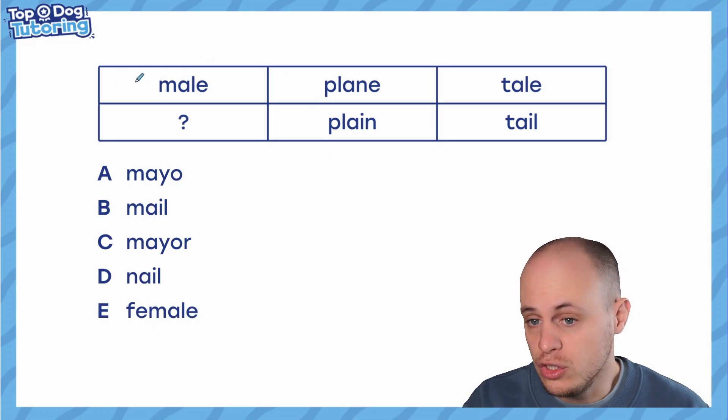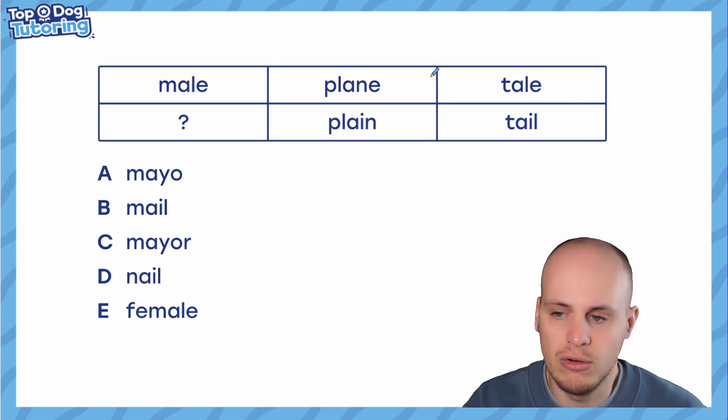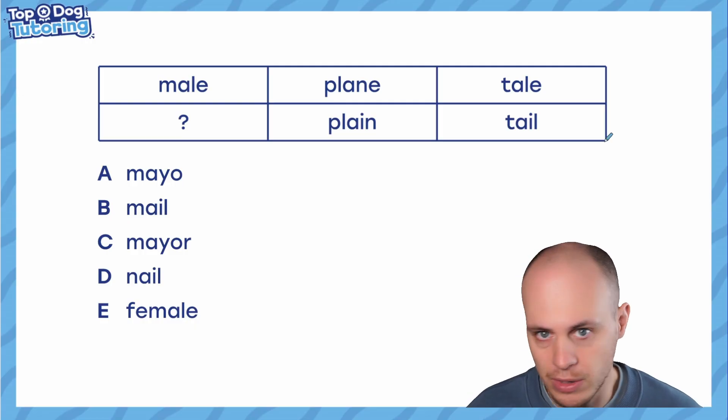Either you can look horizontally across the grid and think, right, the three words going across have some sort of link, or you can look vertically and think, the two words, the pairs of words have some sort of link. Now, in this case, it's very obvious. Just looking at the words and reading them out loud, you can see that the link is in the pairs. We have got words that are homophones in this case. Plain and plane, tail and tale. They are words that sound the same, but are spelled differently and have different meanings.